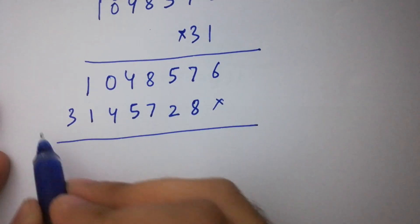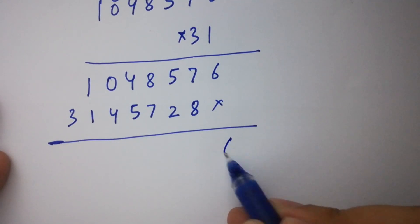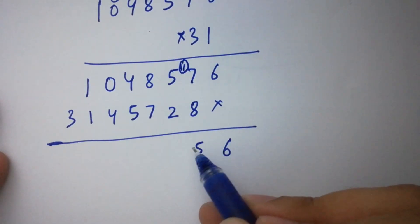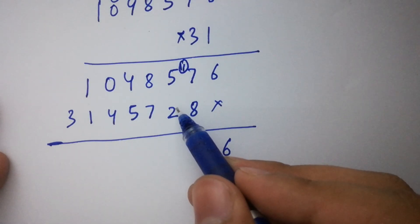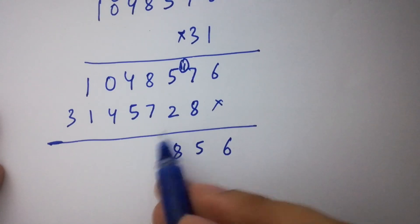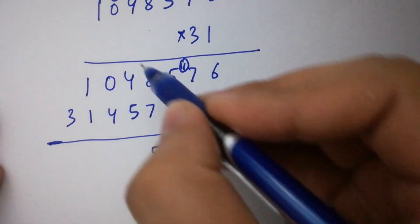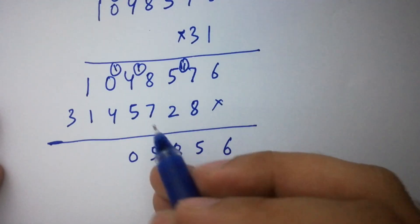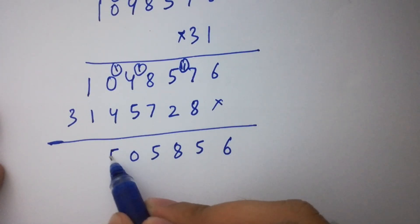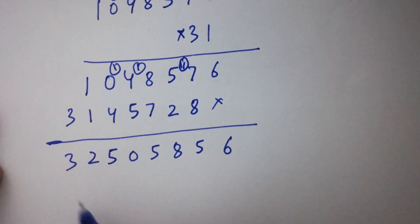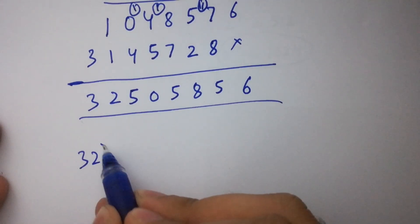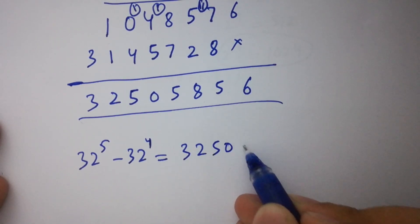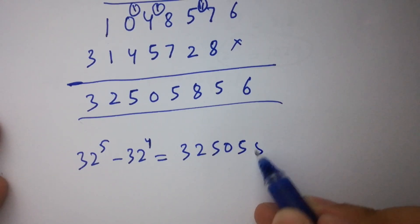Adding the two partial products: 6, then 8 plus 7 is 15 write 5 carry 1, then 5 plus 2 plus 1 carry is 8, then 8 plus 7 is 15 write 5 carry 1, then 5 plus 4 plus 1 is 10 write 0 carry 1, then 4 plus 1 plus 1 is 5 carry 0, then 1 plus 1 is 2, then 3. So finally, 32 to the power 5 minus 32 to the power 4 equals 32,505,856.